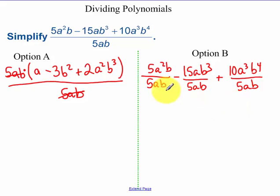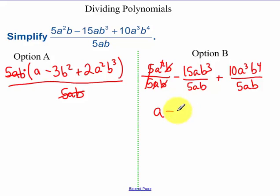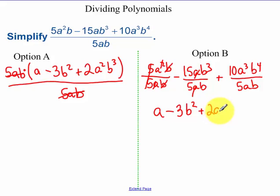The 5's cancel, the a and a squared cancel so I'm left with an a, the b's cancel, 15 and 5 cancel so I have a 3, the a's cancel, and the b's cancel to be a b squared, plus 2a squared b to the third. That's what I got over here, so luckily I got the same thing both times.